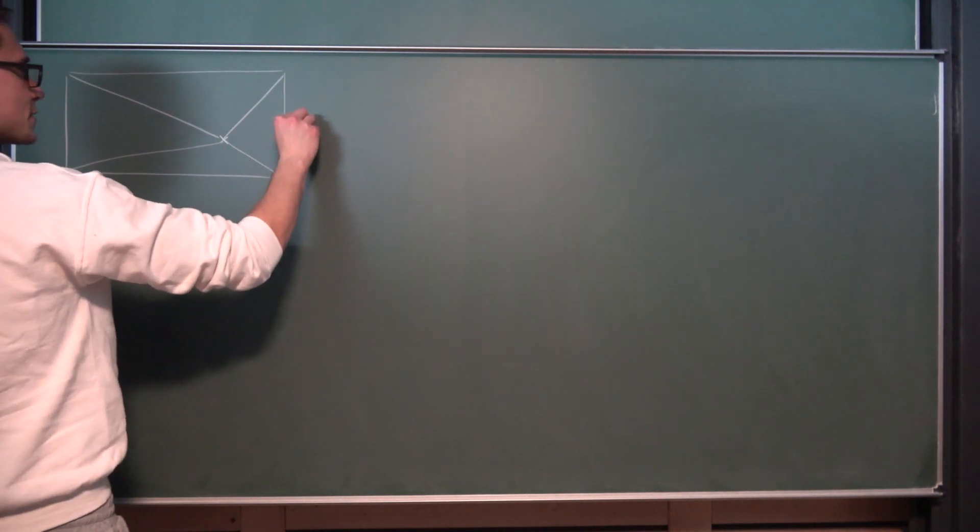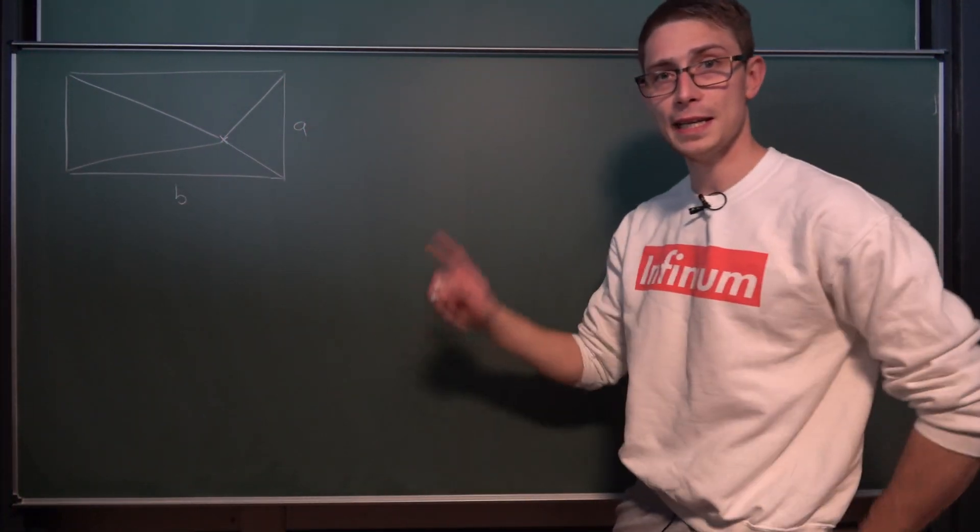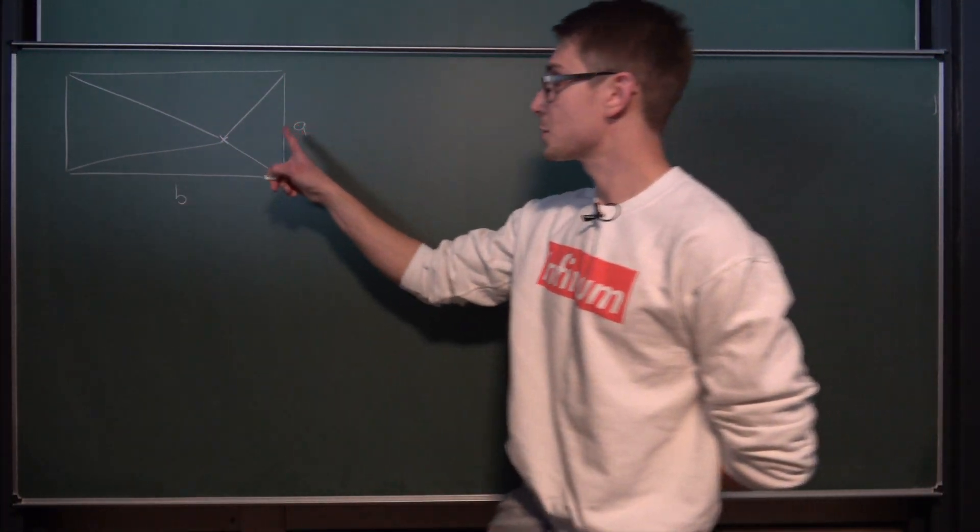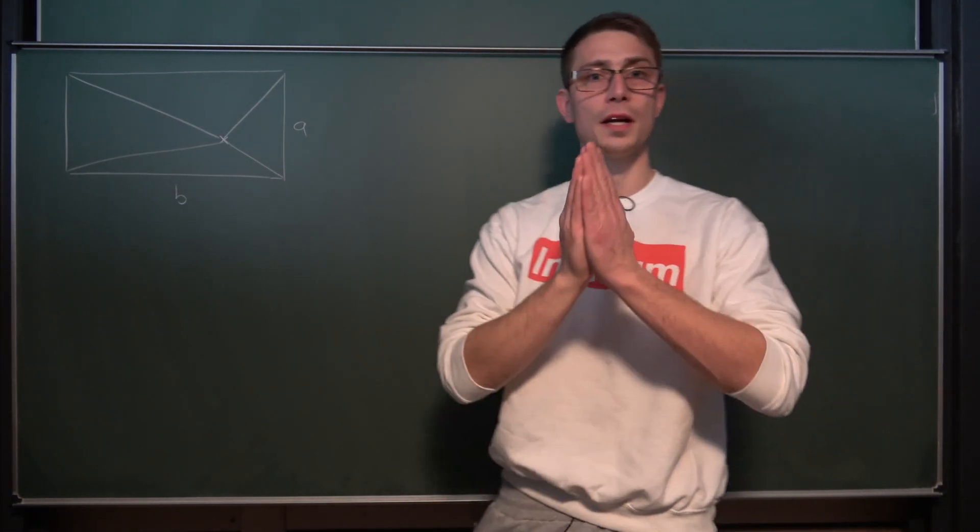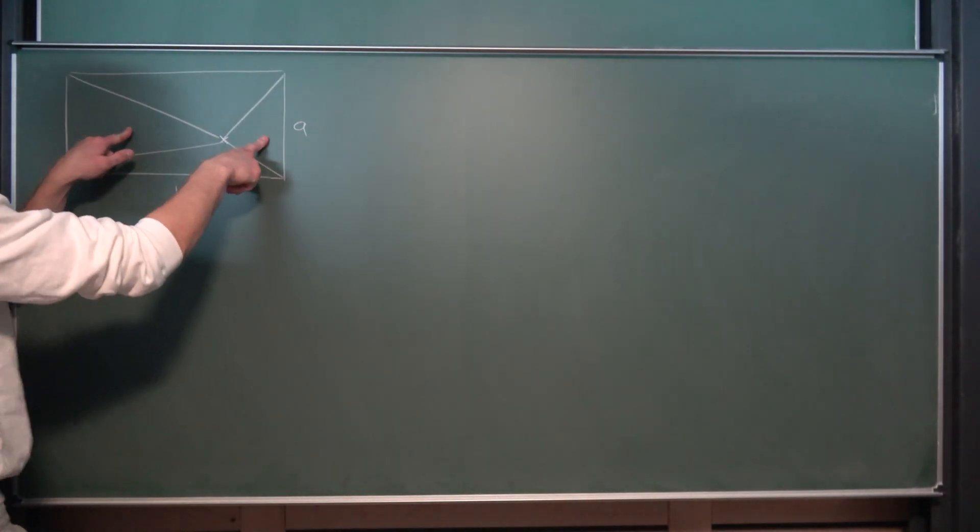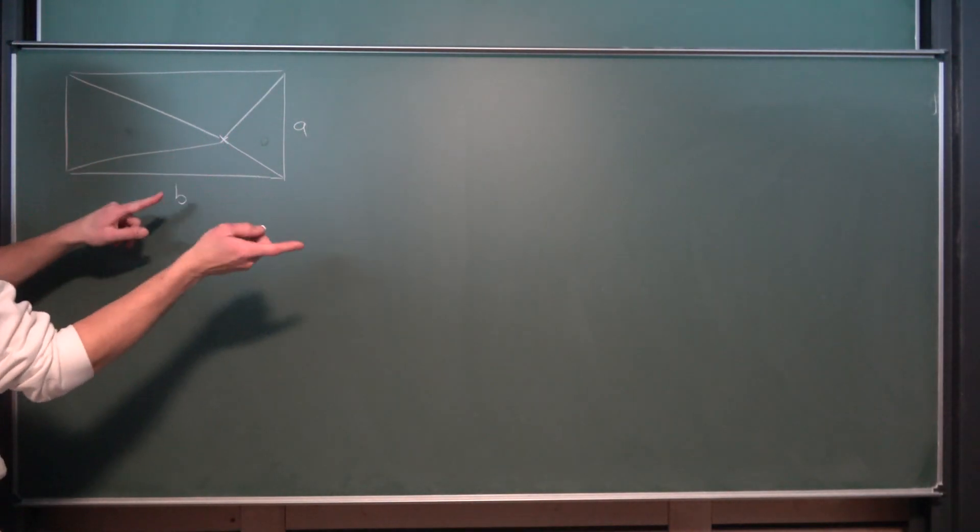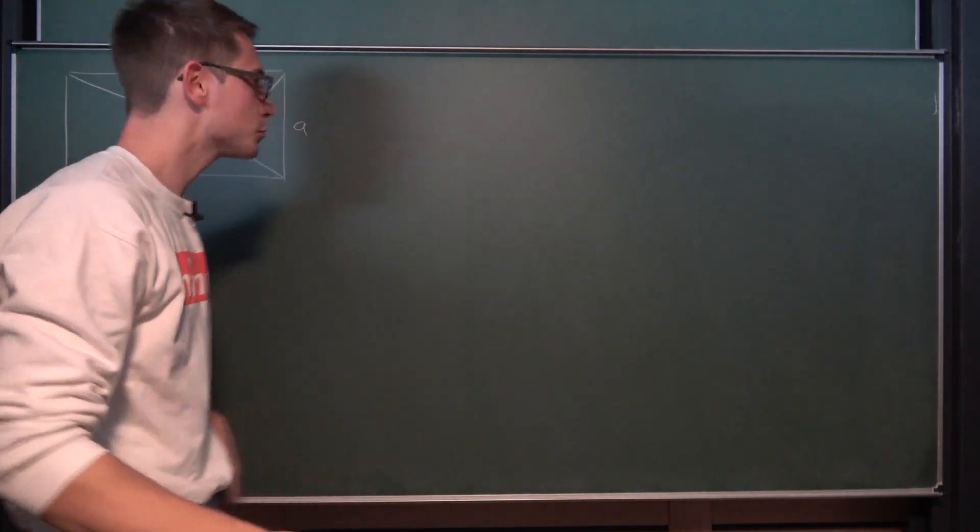The rectangle has side lengths A and B and what I'm proposing here is that the area of the two opposite triangles added together is always equal. So if we have those two triangles, we add the areas together, that's equal to the area of those two triangles. And this is what we want to prove today.